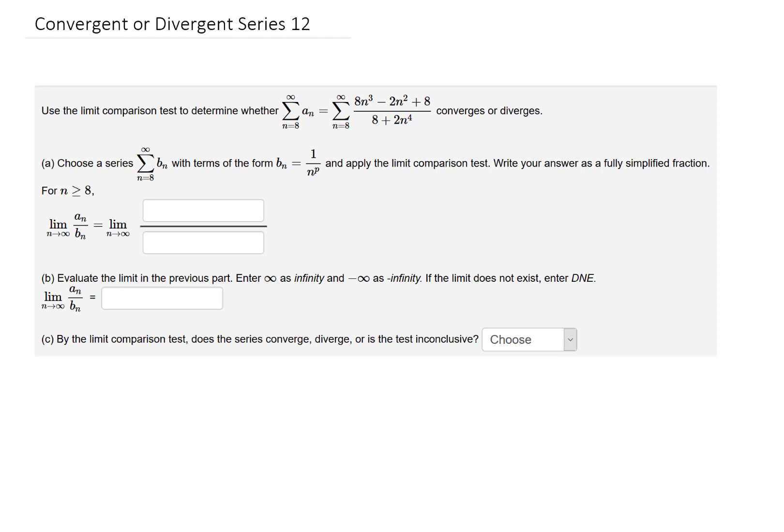We're going to use a limit comparison to determine whether the series converges or diverges. To determine what we should compare to, we can look at the leading term in both the numerator and the denominator. We expect that this series behaves similarly to a series with just an n cubed in the numerator and an n to the fourth in the denominator. Simplifying tells us that we expect our series to behave like 1 over n.